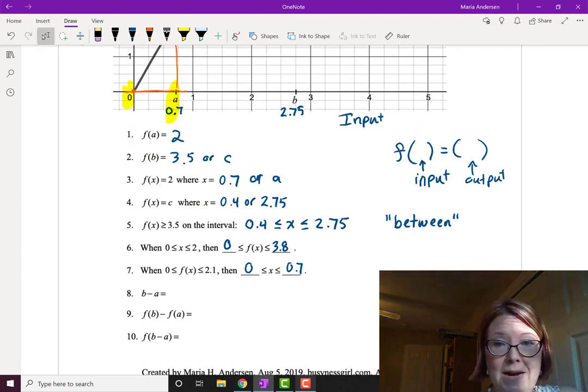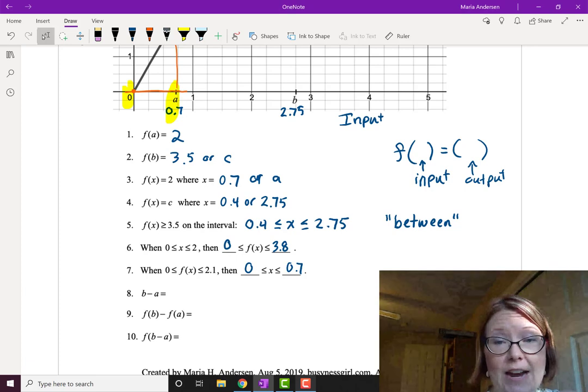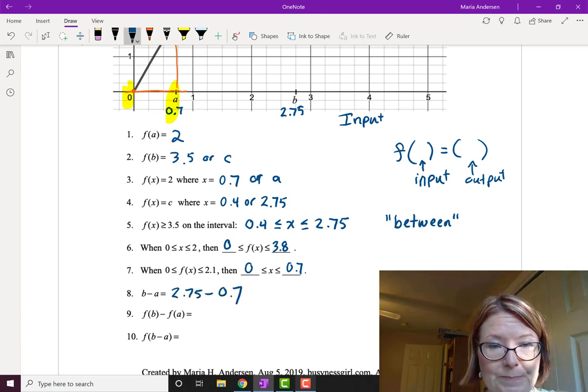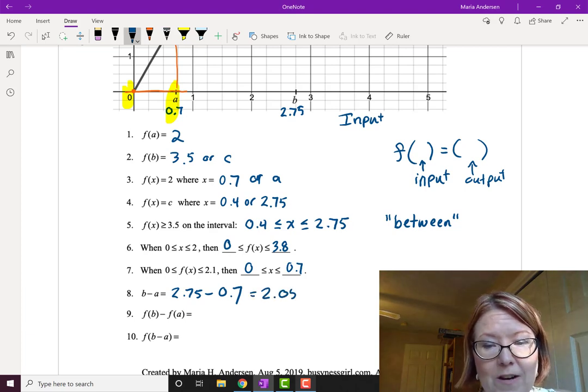Now, b minus a. If we just look at our graph, b and a are just values on the x-axis. So that would be 2.75 minus 0.7. And that's going to give us 2.05 as an answer.